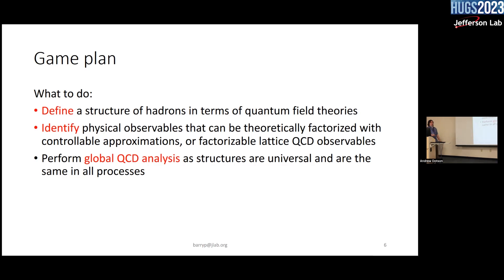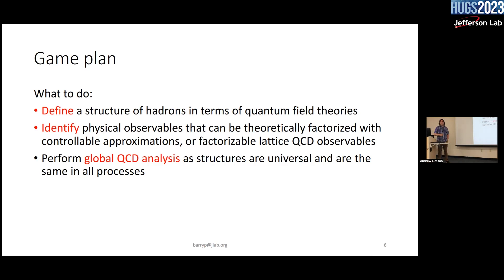You can also do this with lattice QCD — I'll have a few slides on that; Joe Dudek has already talked a little about lattice, but here I focus on lattice structure. You can look at lattice QCD data and relate them to PDFs. These structures are universal: the same PDF appearing in DIS is the same PDF appearing in the Drell-Yan process, so you want to look at multiple different processes to get a better understanding.